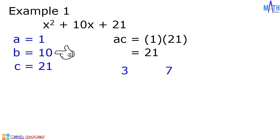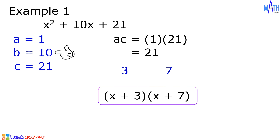Next step, let us divide 3 and 7 by the value of a. Since the value of a is equal to 1, there is no need to divide. Let us write the factors: for positive 3, we have x plus 3, and for positive 7, we have x plus 7. And these are the factors of x squared plus 10x plus 21.